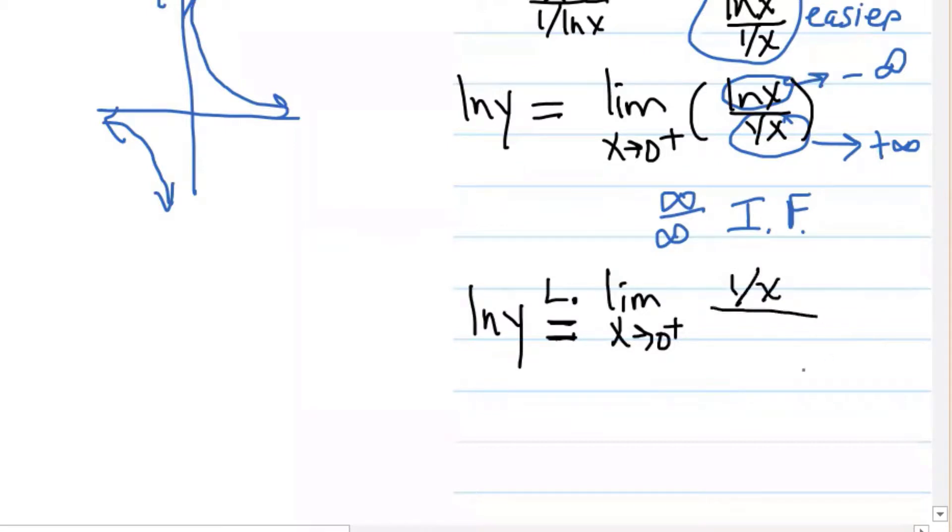And what's the derivative of one over x? Think of it as x to the negative one. Good. Negative one over x squared.